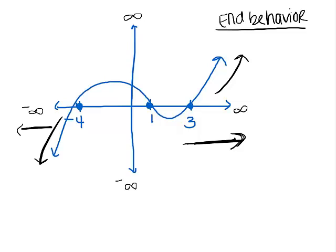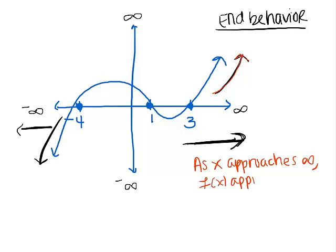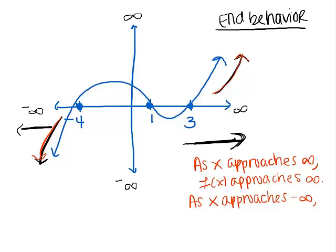We're going to write this answer in a sentence. As x approaches infinity, f of x is going towards infinity — it is going up. So as x gets big, f of x also gets big. And as x approaches negative infinity, f of x also approaches negative infinity. End behavior is going to become very important for us, so that's something you need to pay close attention to.